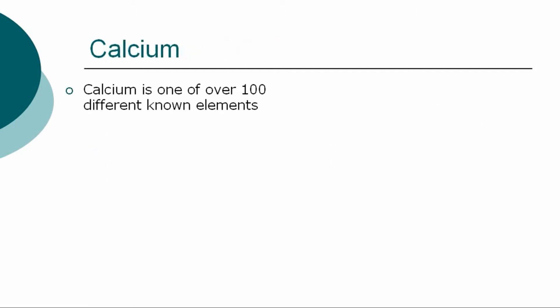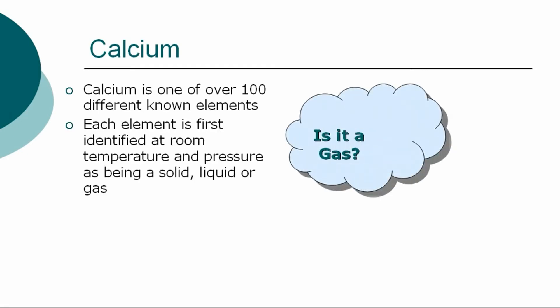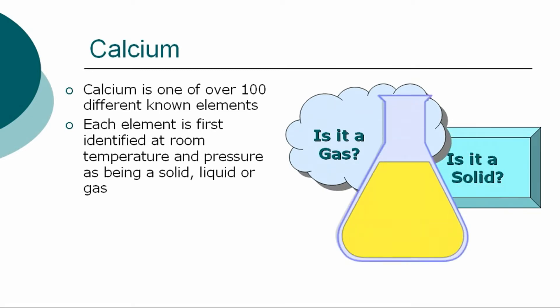The element calcium is one of over 100 different chemical elements known to modern chemistry. Each element is first identified at room temperature and pressure as being a solid, liquid, or gas, referred to as states of matter.